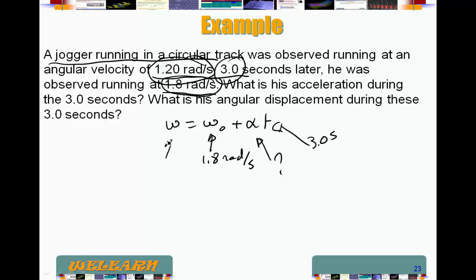And omega final, actually, I made the mistake here. Omega final is 1.8 radians per second. And omega initial is the 1.2 radians per second.